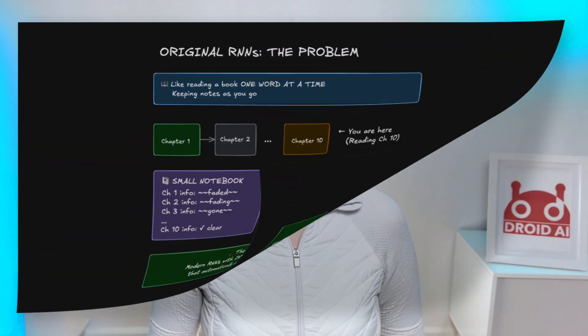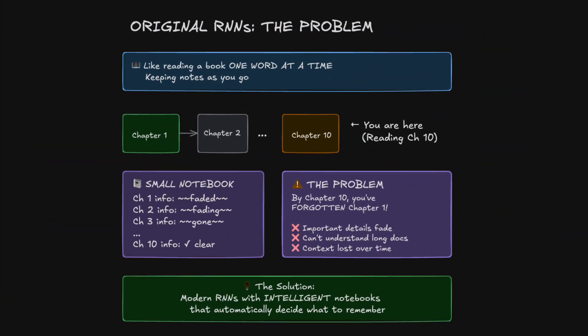The first alternative approach is going back to an older idea called RNNs — Recurrent Neural Networks — but making them actually work better. Original RNNs processed information like a human reading a book, one word at a time, keeping notes as you go. The problem was that their notebook was too small. By the time they reached chapter 10, they would forget chapter 1. Important details would fade away, making them not really good at understanding long documents.